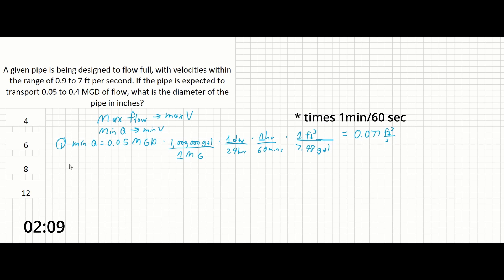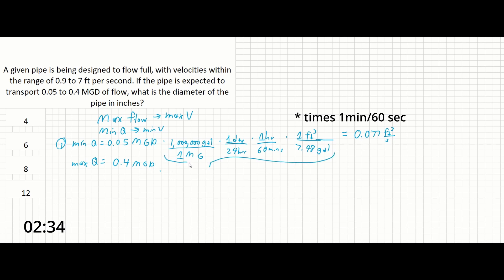Next, we do the same thing for max Q: 0.4 MGD times the same conversion factors as above. Multiplying all of this out gives us 0.619 cubic feet per second.